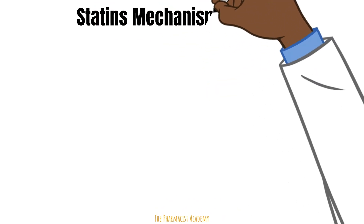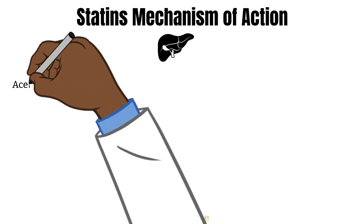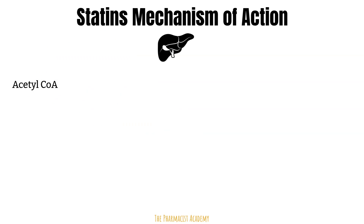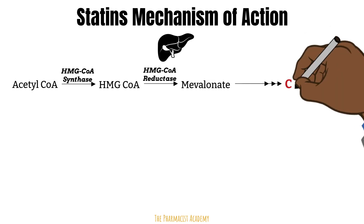The mechanism of action of statins influences both LDL and HDL, and it starts with the liver. Your body makes over 80% of its cholesterol, so that is exactly what we want to target. Cholesterol synthesis begins with acetyl-CoA, which gets converted to HMG-CoA — catalyzed by HMG-CoA synthase. Then HMG-CoA is converted to mevalonate, catalyzed by HMG-CoA reductase. This is followed by a series of reactions which ultimately lead to the end product, cholesterol.